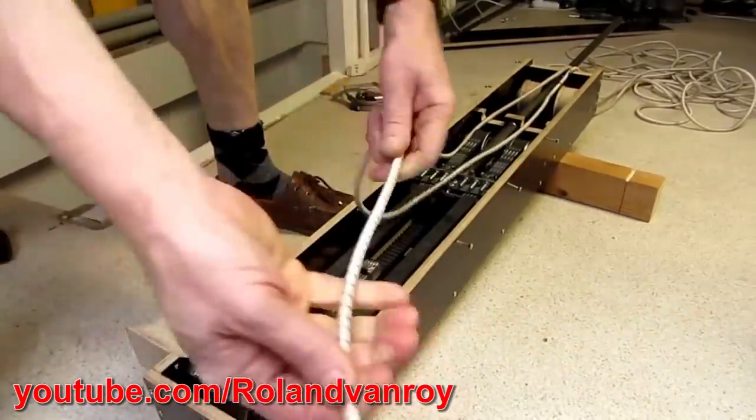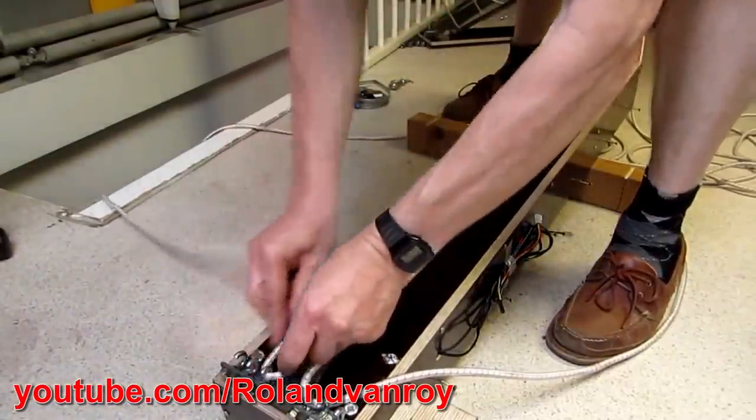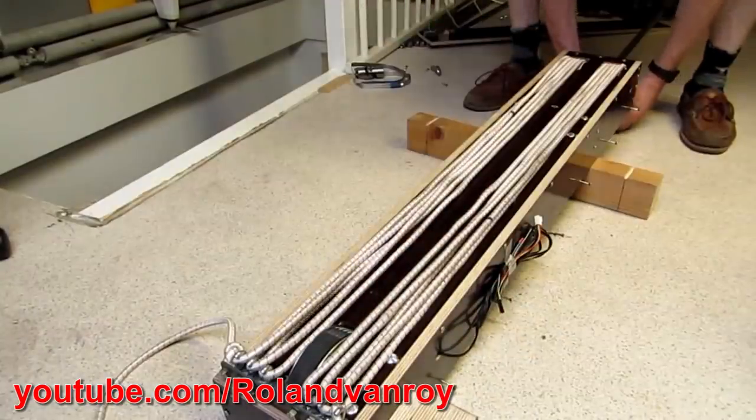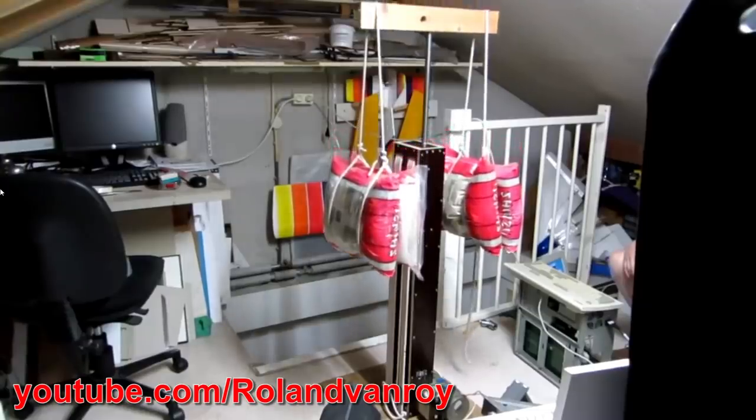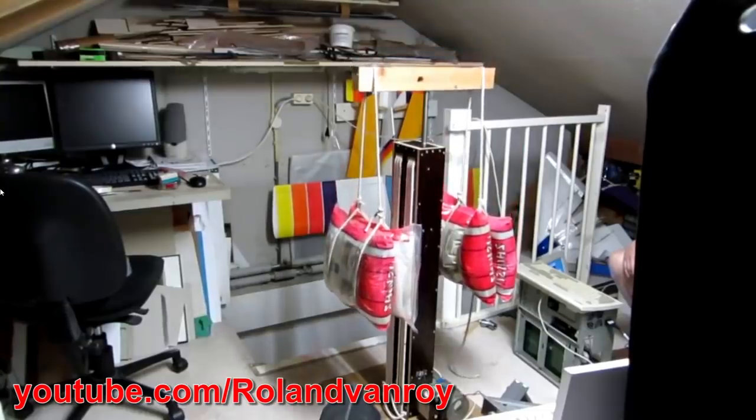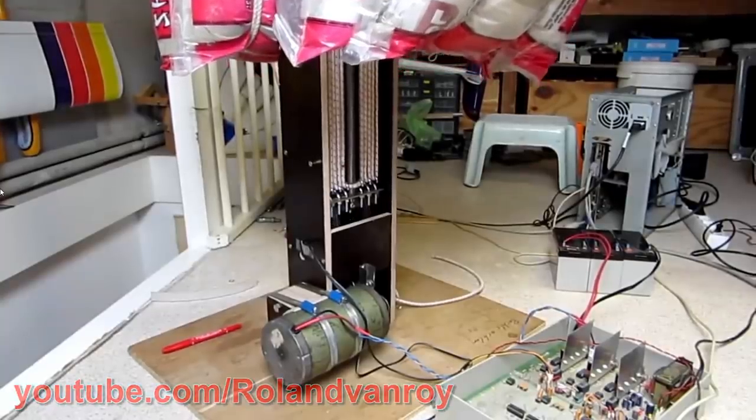I found this example prototype on YouTube which uses bungee cord to assist an electric linear flight simulator actuator. This seems to work pretty well, drawing only a few amps at 50 volts to lift 40 kilograms of mass.